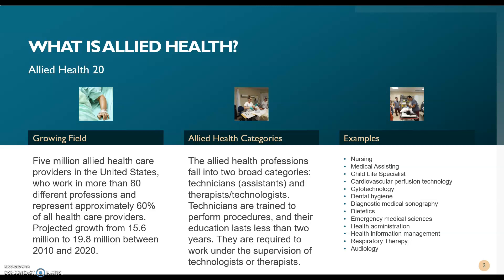Some examples of Allied Health careers include nursing, medical assisting, child life specialists, health information management — there are lots of IT jobs in Allied Health — and respiratory therapy. Have you heard of a child life specialist? They have an amazing job, and in my next life or maybe in retirement, I want to be one. Hopefully these give you good examples to use your previous knowledge or investigate further.